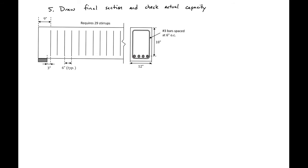Our final step is to draw the final section and check actual capacity. We examine how stirrups are laid out along the beam length. The first stirrup must be placed within half the spacing (3 inches) of the edge of the bearing pad, so we place the first stirrup 3 inches from the bearing, which is 9 inches from the end of the beam. We then space stirrups at 6 inches along the rest of the beam, resulting in 29 stirrups total.